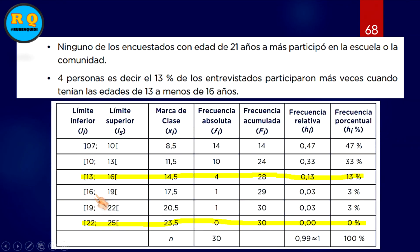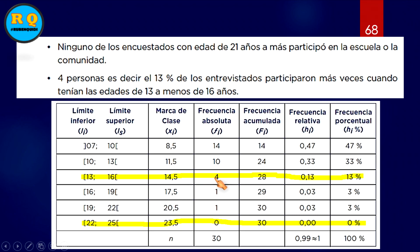Por ejemplo, si te sale este resultado, puedes decir: ninguno de los encuestados de 21 años a más participó en la escuela o la comunidad, 0%. 4 personas, es decir el 13% de los entrevistados, participaron más veces cuando tenían la edad de 13 a menos de 16 años. Aquí tú tienes que hacer la interpretación correspondiente.